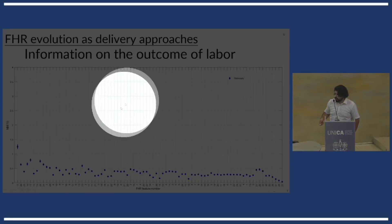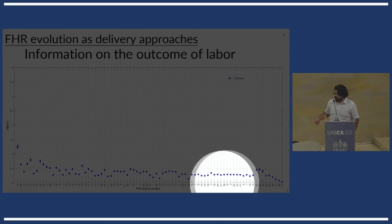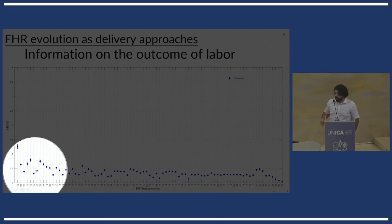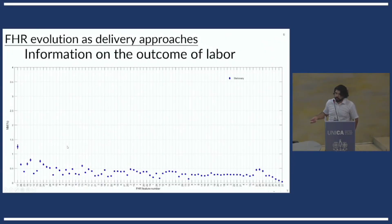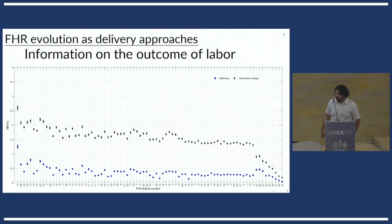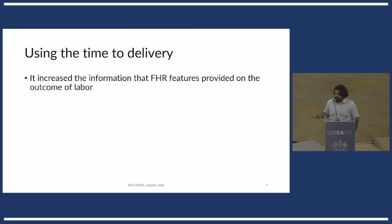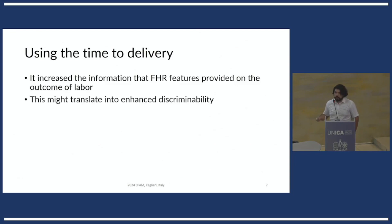Let me show you the level of information that a series of features provided on the outcome of labor independently. These are 83 features that have been proposed in the literature, all of them on the x-axis, and in the y-axis I'm showing the individual information that they provide on the outcome of labor. This is based on a stationary analysis, so no time is considered. When I included the time before delivery to give context to these features, the level of information that they provided doubled or tripled, which means that using the time to delivery increased the level of information that the features provided on the outcome of labor, which might translate into enhanced discriminability.